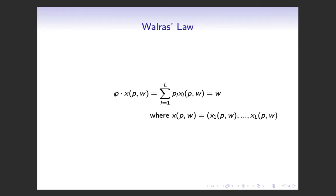What the law states is that the total price of the optimal consumption bundle — that is the price of every good times how much you're consuming of every good — needs to equal your total wealth. You may see this stated in terms of surplus demand later, but here we're just doing it with the optimal consumption. Basically, Walras' Law says that when you're at optimum, you're going to consume fully all your wealth.